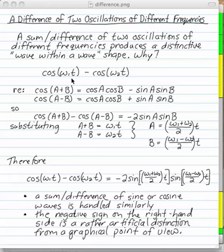Say you have cosine omega 1t minus cosine omega 2t for different frequencies, omega 1 and omega 2. Recall the formulas for trigonometry for cosine of a sum or difference of angles. Cos cos minus sine sine for a sum and two angles, and cos cos plus sine sine for a difference of two angles. If you subtract those two formulas, you get cos(A+B) minus cos(A-B) is minus 2 sine A sine B.